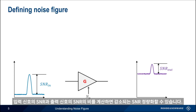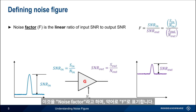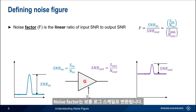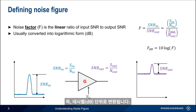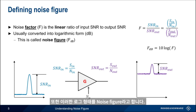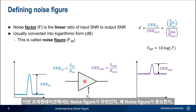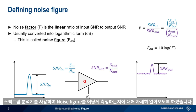We can quantify SNR degradation by calculating the linear ratio of input SNR to output SNR. This is called noise factor and is abbreviated F. Since logarithmic units are much more widely used in RF than linear units, noise factor is then usually converted into logarithmic form — that is, into units of decibels or dB — and this logarithmic form is called noise figure. In the remainder of this presentation, we'll go into more detail about what noise figure is, why noise figure is important, and how noise figure is measured using a spectrum analyzer.